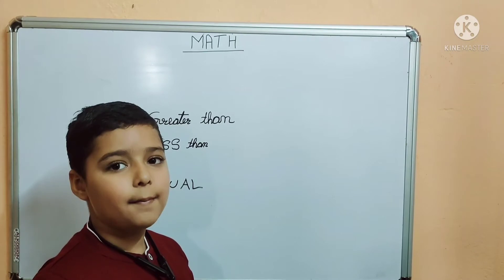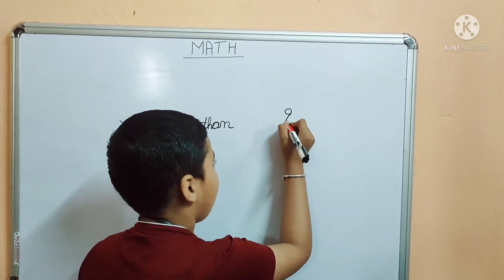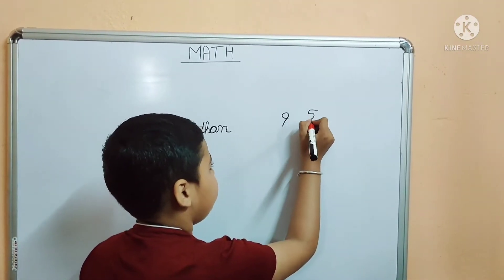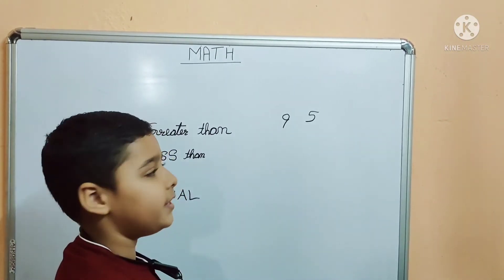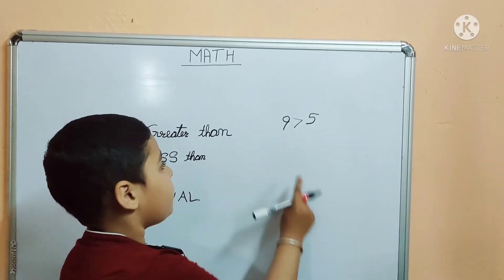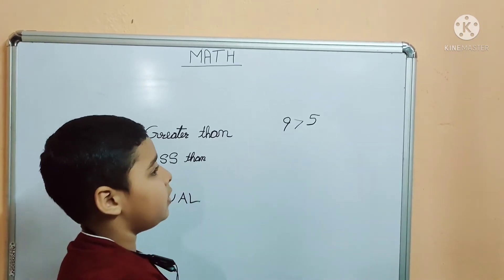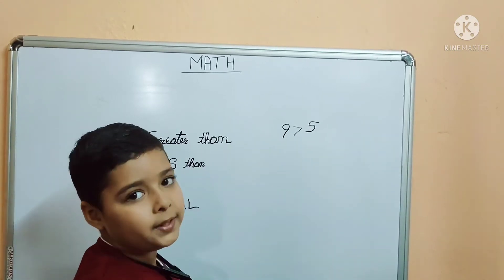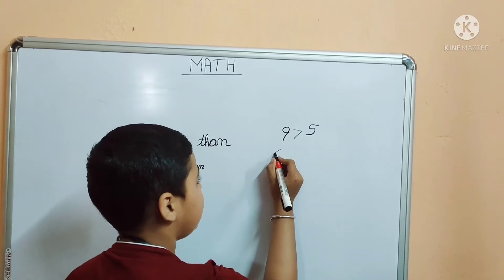Let's take an example to learn this. 9 and 5 — so which symbol do we take here? Yes, it is the greater than symbol, because 9 is the bigger number and 5 is the smaller number. The symbol's mouth opens at the bigger side.